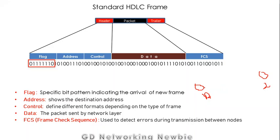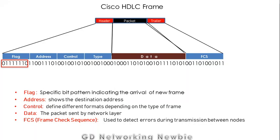When the frame travels from one router to the next, errors may be introduced. The receiving router uses the FCS field to check whether any errors have been introduced during transmission. If the frame has been corrupted, the router discards it and does not process it. If there are no errors, the router processes the frame for further delivery to the next hop or to the destination. That is the job of the Frame Check Sequence.